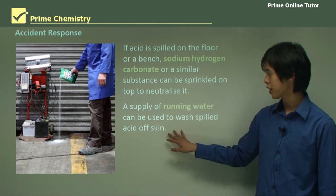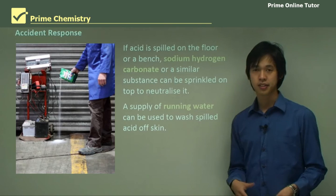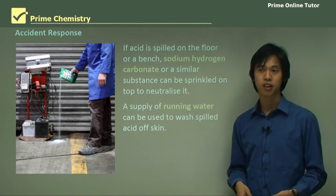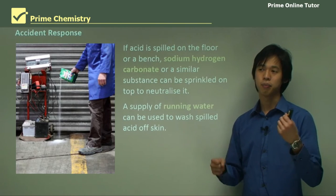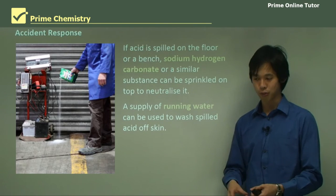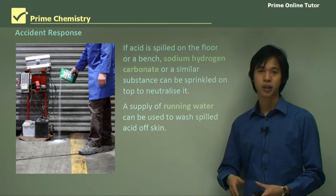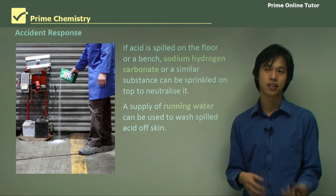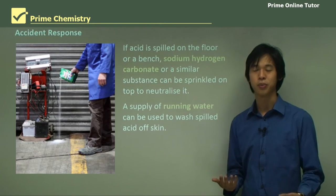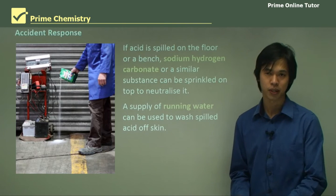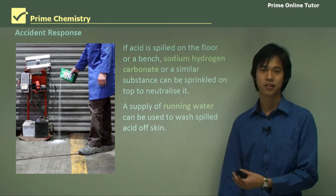A supply of running water can be used to wash off acid that's been spilled on your skin. When you spill acid on your skin, wash it straight off — otherwise it will burn you, and it will also release a lot of heat from drawing water out of your skin. A big supply of running water not only washes away the acid, it can move the heat away as well — similar to how when you burn yourself on a Bunsen burner you put it immediately under cold water to get all of that heat out.